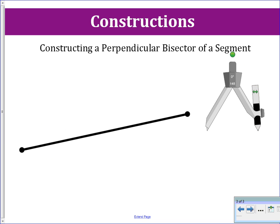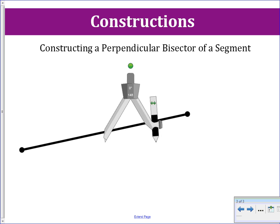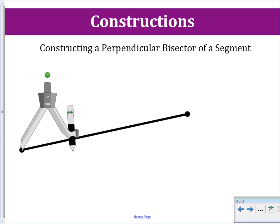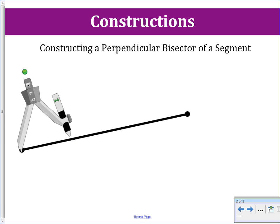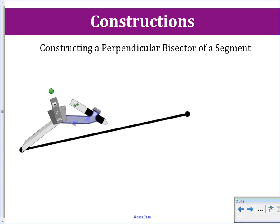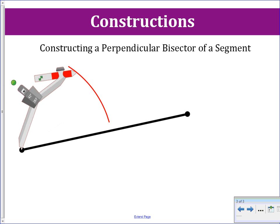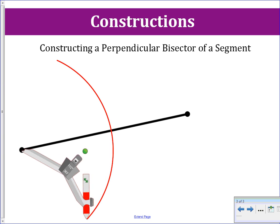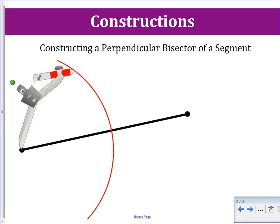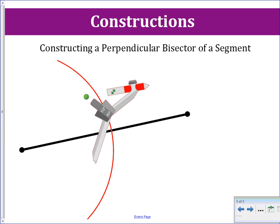So we have our segment. We are going to place our compass on one endpoint, then extend our compass over halfway — that looks to be about over halfway. I am going to change our color so we can draw an arc above the line and an arc below the line. We need to make sure our arc comes up enough to where we think our perpendicular bisector will be, so that our circles are going to intersect.